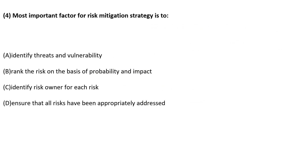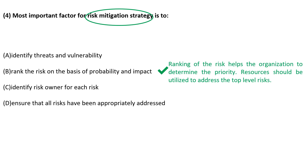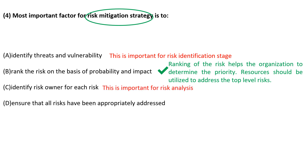Next question: the most important factor for mitigation of risk is the risk mitigation strategy — that is, what kind of control to implement and which risk to control first. In such cases, it is important to rank the risk first. Ranking of risk helps the organization determine priority, and resources should be utilized to address the top-level risk. Risk and vulnerability are more important from a risk identification perspective rather than a risk mitigation perspective. Risk owner identification is more important during risk analysis. It is not practical to address all risks.